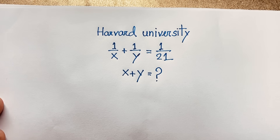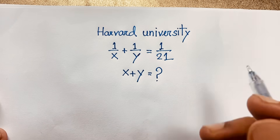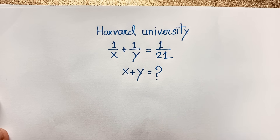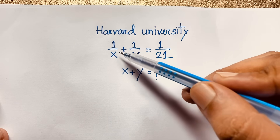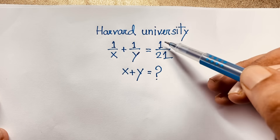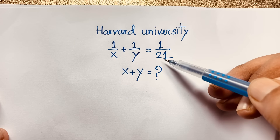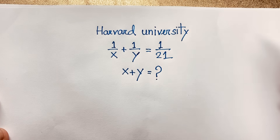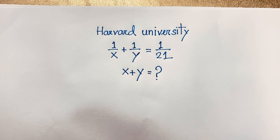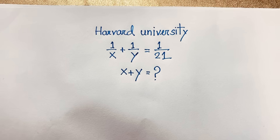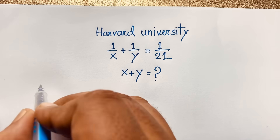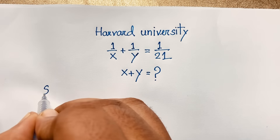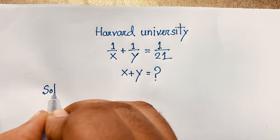Hello everyone, welcome to Russia's Classroom. Today we have solved an interesting algebra problem, which is 1 over x plus 1 over y is equal to 1 over 21. x plus y is equal to what? I will solve this interesting math question using an easy method.